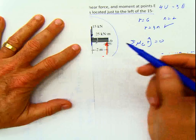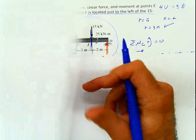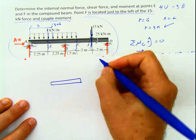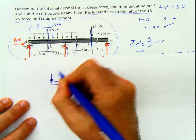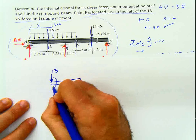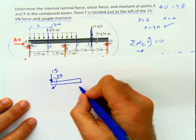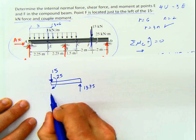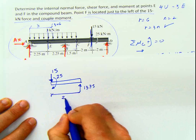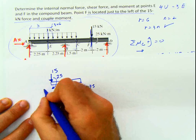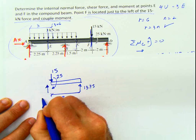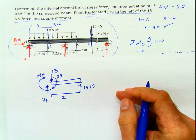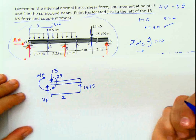Using the right side of the beam: we have the 15 kilonewton force, the 25 kilonewton meter moment, and the reaction at D of 13.75 kilonewtons. The distance from the section to D is 2 meters. Using the positive convention for the right side, the internal forces are VF and MF.